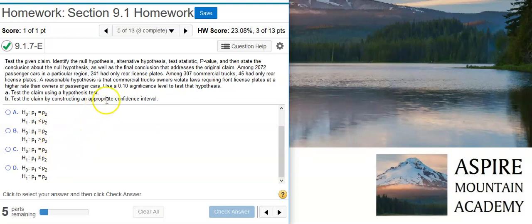To do that, we go back and look at the claim that's being made. The claim is that commercial truck owners violate laws requiring front license plates at a higher rate than owners of passenger cars. So, trucks are going to be greater than cars, but which is one and which is two? Well, if you read the problem statement, the cars are mentioned first, so they're going to be the first proportion, and then the trucks are going to be the second proportion. So, if trucks are greater than cars, that means two is greater than one, which means one is less than two. And the alternative hypothesis that says one is less than two is going to be this one right here.